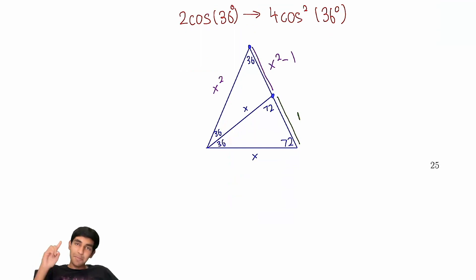36, 36. Angle bisector theorem. So we can say x squared minus 1 over x squared equals 1 over x. Now we just cross multiply, divide by x. And now we just use quadratic formula.